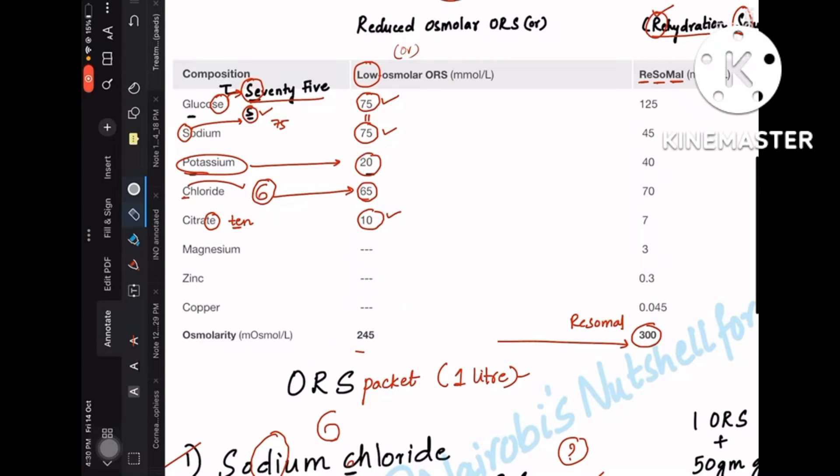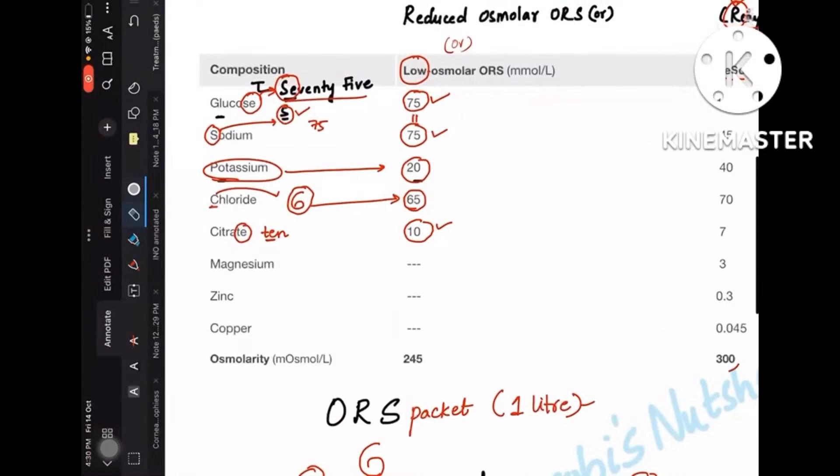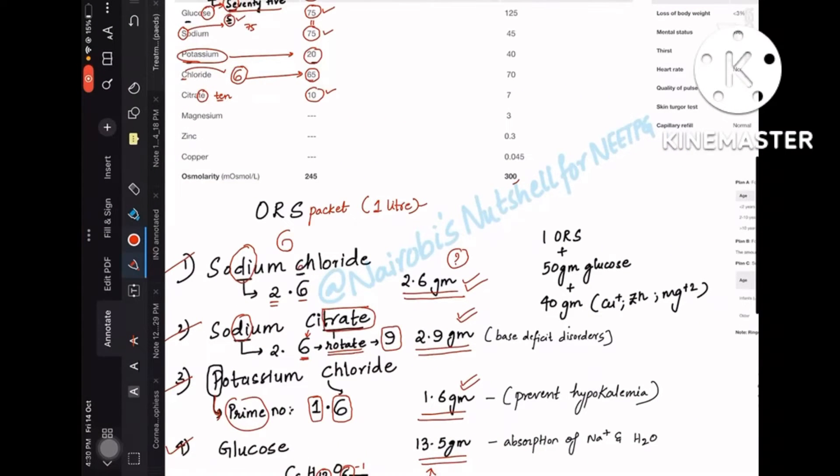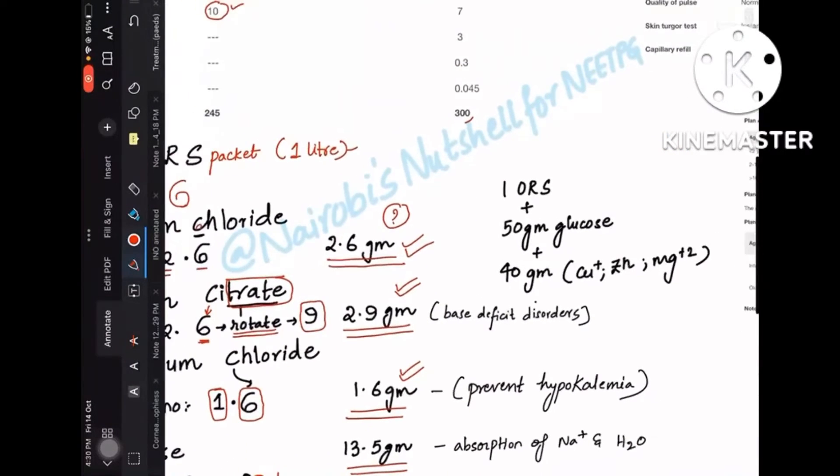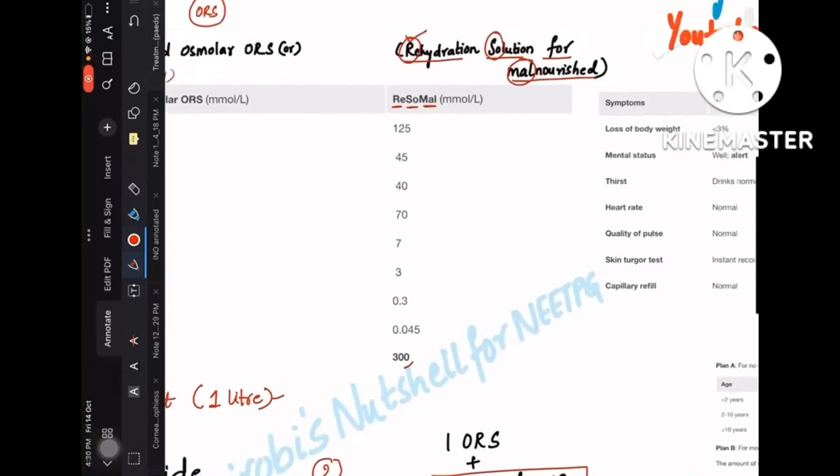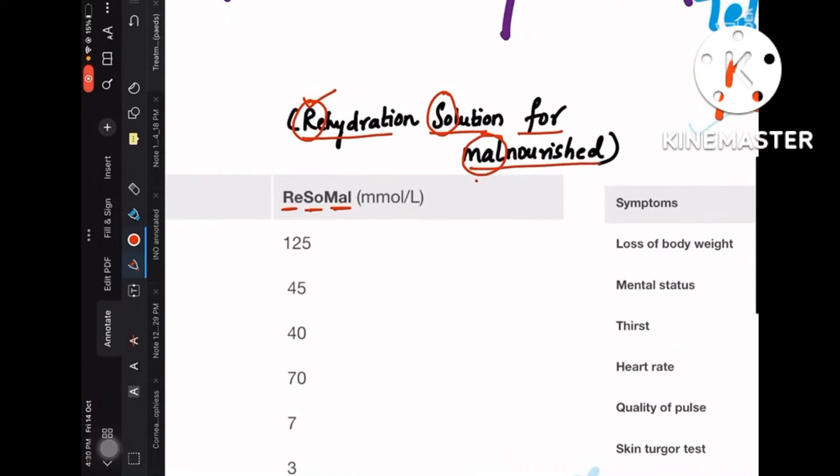So now you got that clarity right, why it is called low osmolar. 75, 75, 20, and C for chloride 65, and citrate is TEN, that is 10. Now when we discuss about ReSoMal solution, ReSoMal solution is also this ORS solution only, but it has extra 50 grams of glucose because you are giving this ReSoMal solution to malnourished kids.